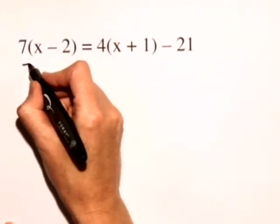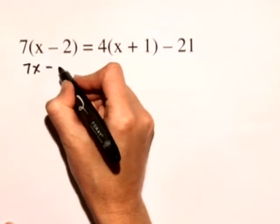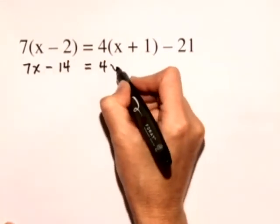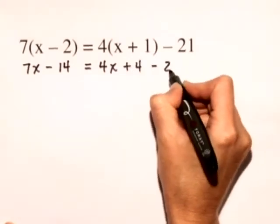So first we'll distribute and we have 7x minus 14 is equal to 4x plus 4 minus 21.